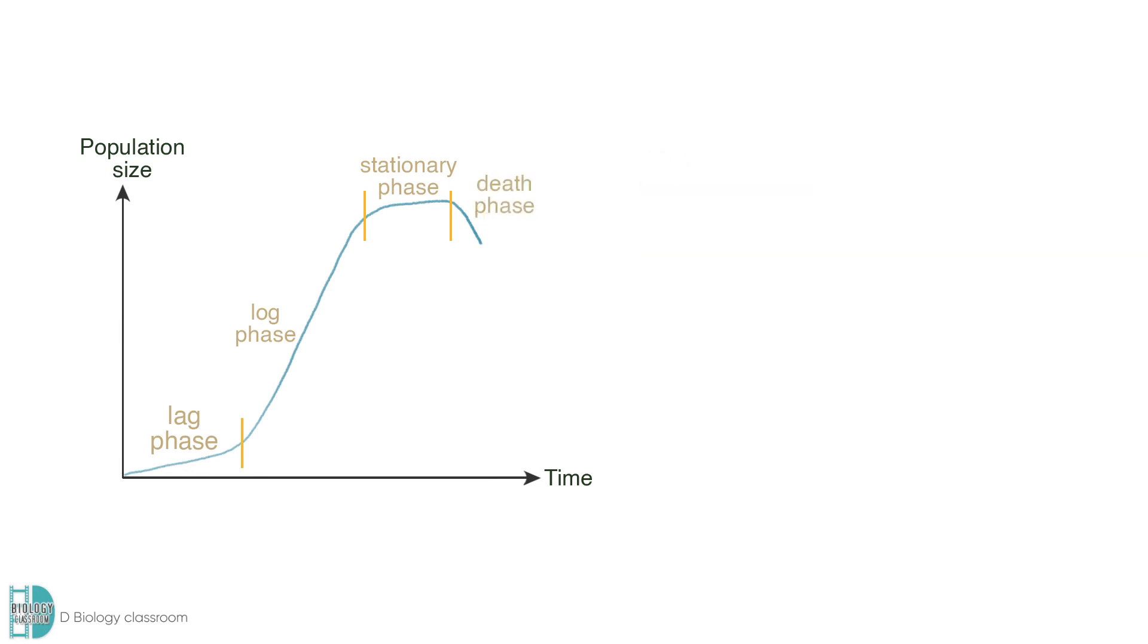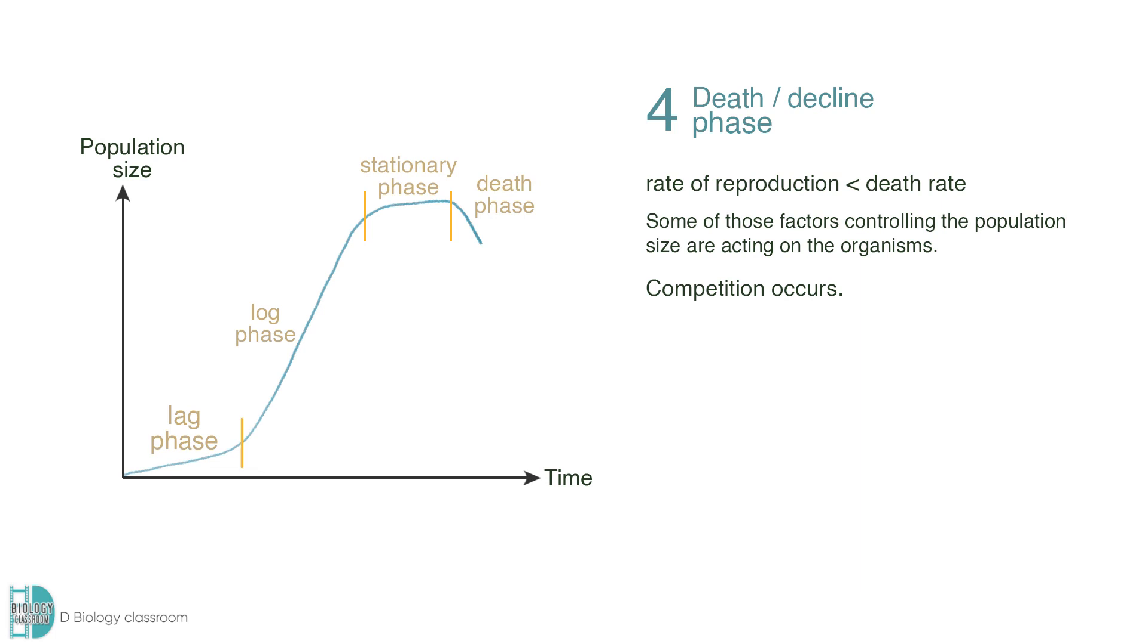Then, the population enters the death or decline phase. There is a fall in the population size, as the rate of reproduction is slower than the death rate. Some of these factors controlling the population size are acting on the organisms. Competition occurs among the members of the population. Food shortage, insufficient water supply, and limiting space are some common issues.